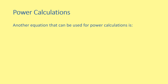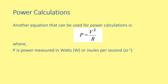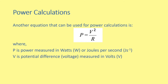Another equation which can be used for power is P equals V squared over R. Again, this only appears in the National 5 course and is contained on the relationship sheet. Power is measured in watts or joules per second, V is the potential difference measured in volts, and R is the resistance measured in ohms.